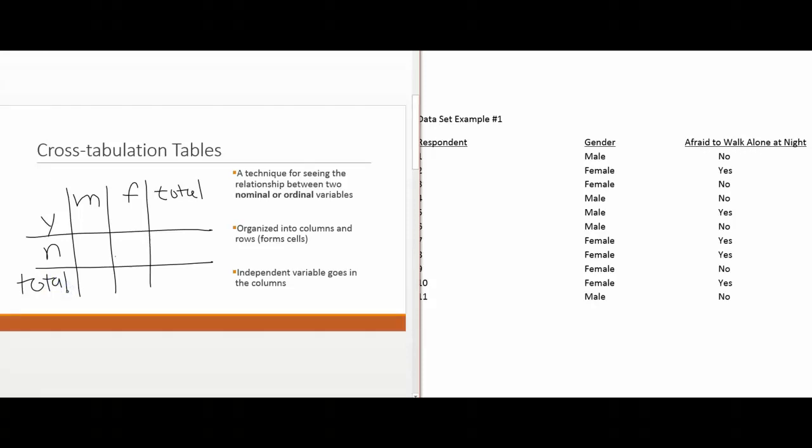The next step is to tally up the number of observations for each cell. In other words, how many males said yes, how many males said no, how many females said yes, and how many females said no. Now I've completed my tallies. It looks like only one male said they were afraid to walk at night, while four females said they were afraid to walk at night. A total of five people said they were afraid to walk at night, and a total of six people said they were not afraid to walk at night. We had six females and five males.